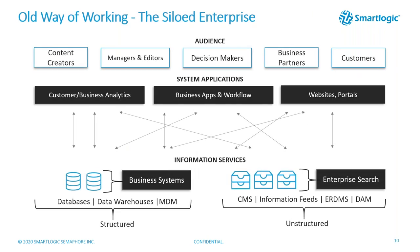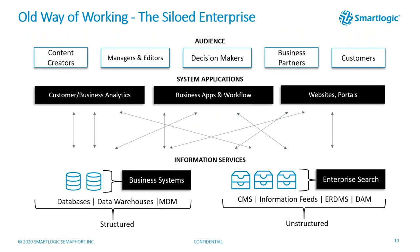Looking at the old way of working — the siloed enterprise. There are lots of people doing different tasks, lots of different systems from customer analytics through business applications and workflows to websites and portals. In today's siloed enterprises there is a direct peer-to-peer connection between an application and its underlying data, and meanings and concepts are hardwired into those connections. So if you're in marketing analytics you may have a great definition of your brand, but in supply you can't access that meaning — it's locked up in that point-to-point connection.